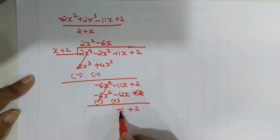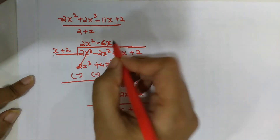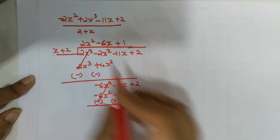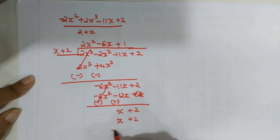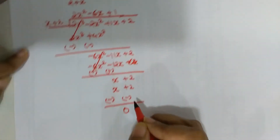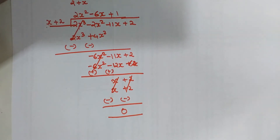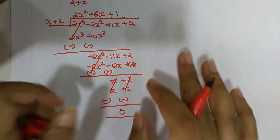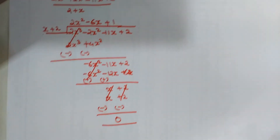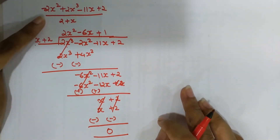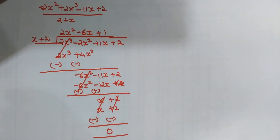Now I have x in the dividend remainder and x in the divisor, so I multiply by 1. Bringing x down, and 1 multiplied by 2 gives plus 2 — signs change to negative, negative. So the remainder here is 0. In this way you can do the division of two polynomials using the long division method.